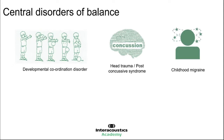Childhood migraine is relatively common and something that children often do grow out of. There is obviously the risk of familial migraine also. However, these can present with some balance disruption, as children are not the most reliable at describing dizziness. Vascular conditions can also affect both the central systems to such an extent that the balance coordination can be impaired or disrupted.